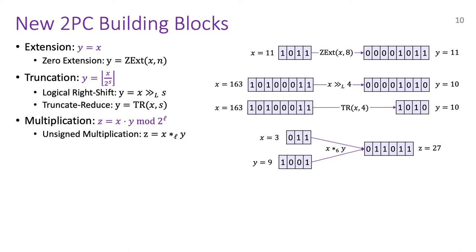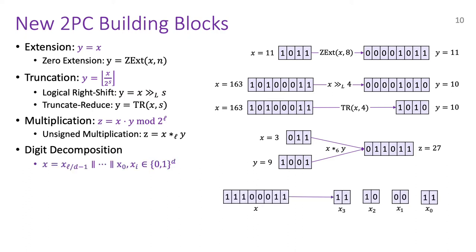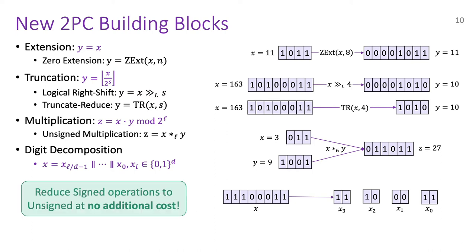Then, we have an operator that multiplies operands of unequal bitwidths. This operator has an additional parameter L which denotes the output bitwidth. For instance, here we have a multiplication between a 3-bit and a 4-bit integer and the output is stored in 6 bits. Finally, we have digit decomposition which simply takes an L-bit integer and splits it into blocks of d bits each. For extension, truncation and multiplication, we also have signed variants which take signed integers as input. In the paper, we show how to reduce signed operations to unsigned operations at no additional cost.